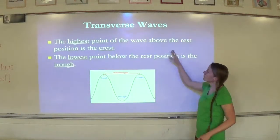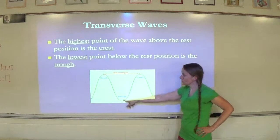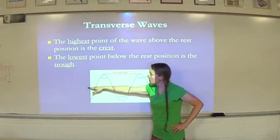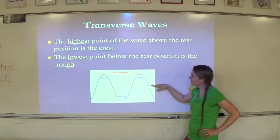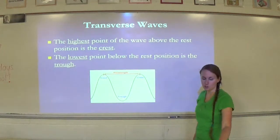The highest point on the wave above the rest position is called the crest, and the lowest point below the rest position is called the trough. The rest position is just an imaginary line, kind of like the equator, that goes right between the middle of the wave. The highest point is the crest, the lowest point is the trough.